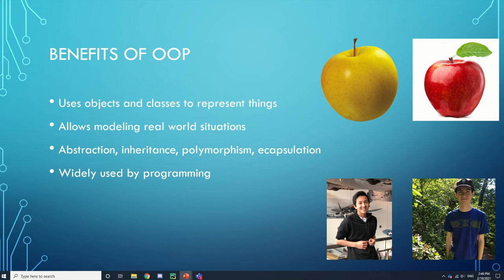If you want to represent an apple in programming, this is how you would do it — it's the easiest way. If you wanted to create a program for a real-world problem, object-oriented programming would be useful. Down here we have two of our Coding Club officers. They're obviously different people, and if we say they are objects, they have different attributes — they look different, different heights, et cetera.